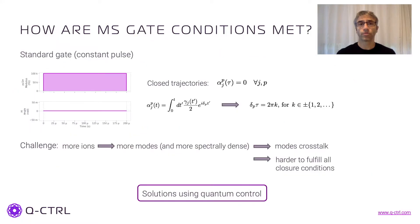So how are those conditions matched? If we have the standard Mølmer-Sørensen gate, we have a constant pulse applied to the system. And the condition for closed trajectories actually implies a condition between the detuning of the laser to the frequency of the modes and the gate time. So the product of the detuning by the gate time must be an integer multiple of 2π.